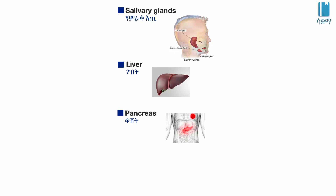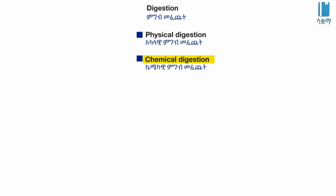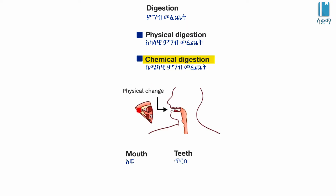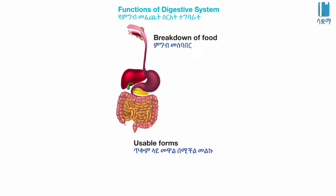There are two types of digestion: physical digestion and chemical digestion. The function of our digestive system is the breaking down of food into smaller, usable forms.